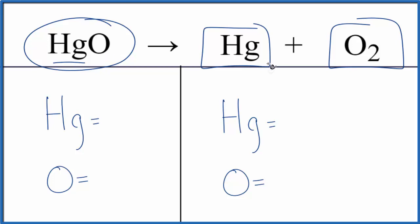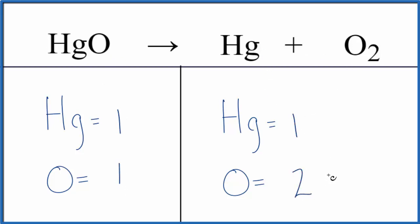Let's balance the equation. We have one mercury atom, one oxygen atom in the reactants. In the products, we have one mercury and two oxygen atoms. It looks like all we really need to do to start out is put a two in front of the mercury oxide, the HgO.